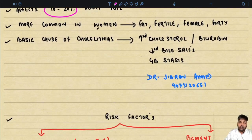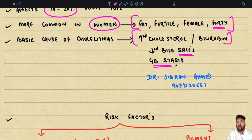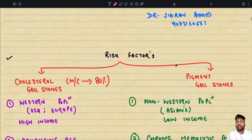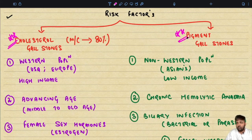Gallstones are more common in women — the dictum being the 'fat, fertile female of 40.' The basic cause of cholelithiasis is increased cholesterol or bilirubin, decreased bile salts, and gallbladder stasis. There are two types of gallstones: the more common cholesterol gallstone and the less common pigment gallstone. They differ in risk factors, pathogenesis, and morphology.